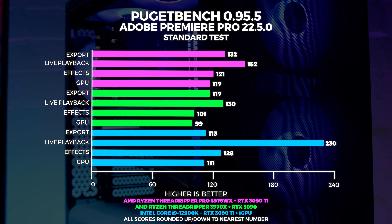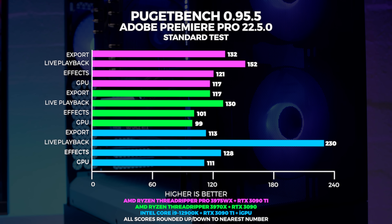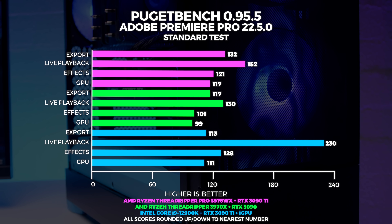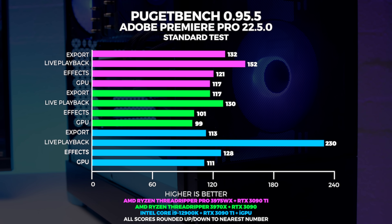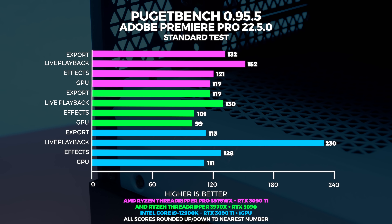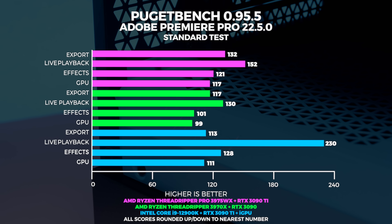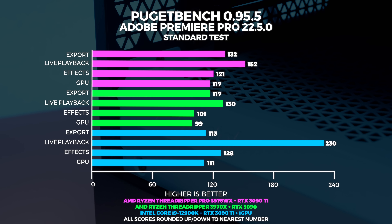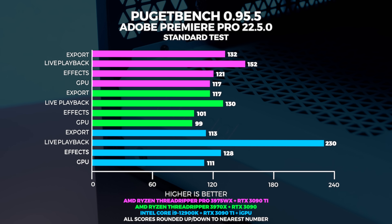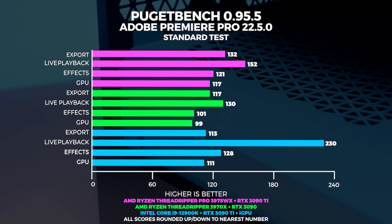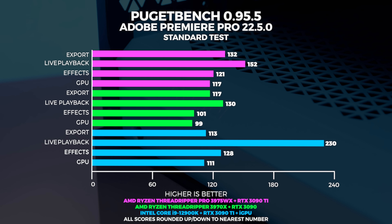Remember, this is a CAN benchmark and the codecs and formats used in Puget Bench are not the codecs that we shoot in. We shoot exclusively in Blackmagic RAW. Blackmagic RAW loves lots of RAM so playback performance won't be too different from what we're already used to. It also really loves fast GPUs, so I don't see it changing too much.